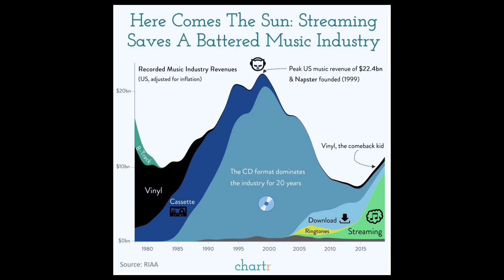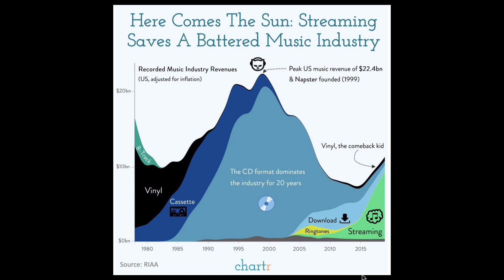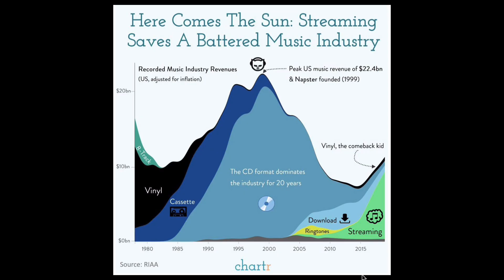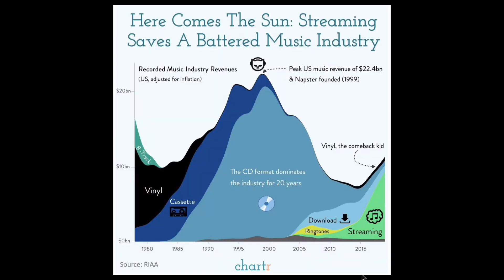Here's a great one looking at music industry revenues over time and where that revenue has come from. Starting in the late 70s, early 80s, where 8-track — I don't even know what 8-track is — vinyl and cassettes were the dominant formats. Then through the 80s, vinyl and cassettes take off. I remember these very well. And then CDs dominate for 20 years, really taking the overall revenue of the industry up. And then it hits this peak where Napster came along and then it plummets.